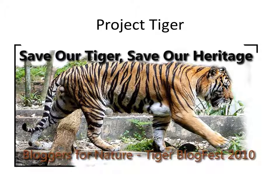Coming to Project Tiger: the tiger is one of the key wildlife species in the faunal web. In 1973, authorities revealed that tiger population had dwindled to 1,827 from an estimated 15,000 at the turn of the century. Major threats include poaching for trade, shrinking habitat, depletion of prey species, and growing human population. The trade of tiger skins and use of bones in traditional medicines, especially in Asian countries, left the tiger population on the verge of extinction.